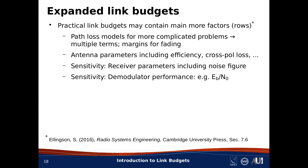You might want to explicitly consider antenna efficiency and cross-polarization losses. You might want to include receiver parameters, such as noise figure, in this analysis. And you might want to see explicitly the effect on the pre-detection signal-to-noise ratio. If so, this is all easily accommodated in the link budget framework. In addition, there are methods for analysis of bottom-line sensitivity, accounting for things like demodulator performance. This approach is not limited to just received power or pre-detection signal-to-noise ratio.